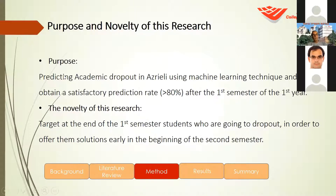The purpose of our study, as I said before, is predicting academic dropout in our college using machine learning techniques and obtaining a satisfactory predicting rate after the first semester of the first year. The novelty of this research is that we target, at the end of the first semester, the students who are going to drop out, in order to offer them solutions early at the beginning of the second semester.